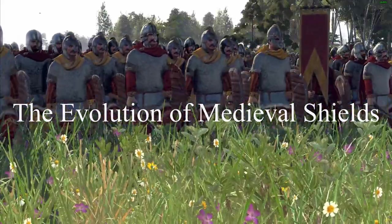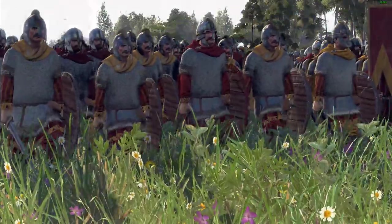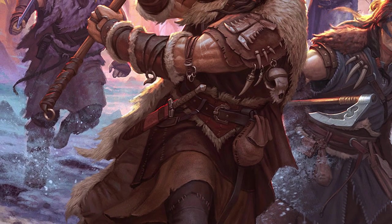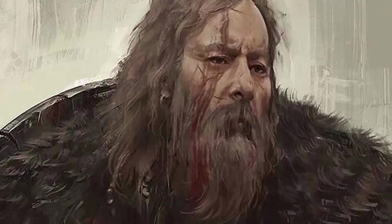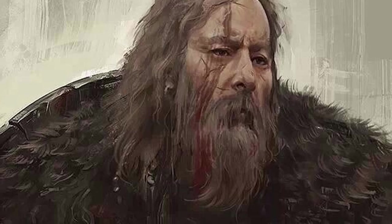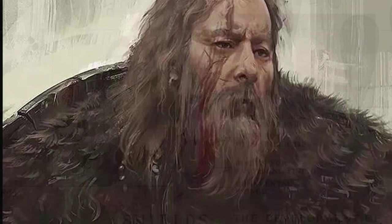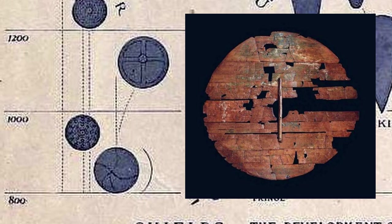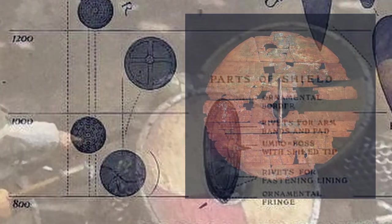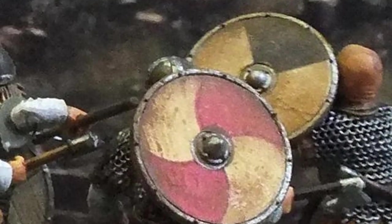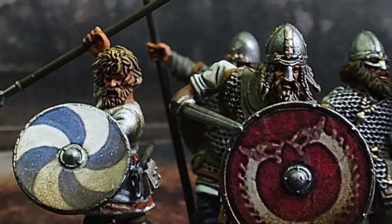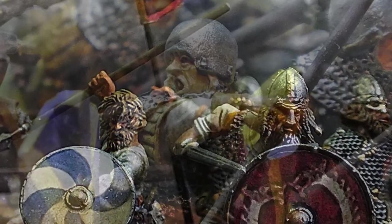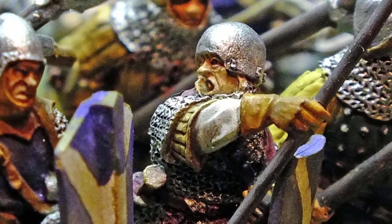The evolution of medieval shields: the early middle ages saw quite crude forms of armor and shield. Metal had not begun to be widely used, so both armor and shields were commonly made of wood and animal hide. The shields tended to be small round objects that served a minimal level of close-range defense.